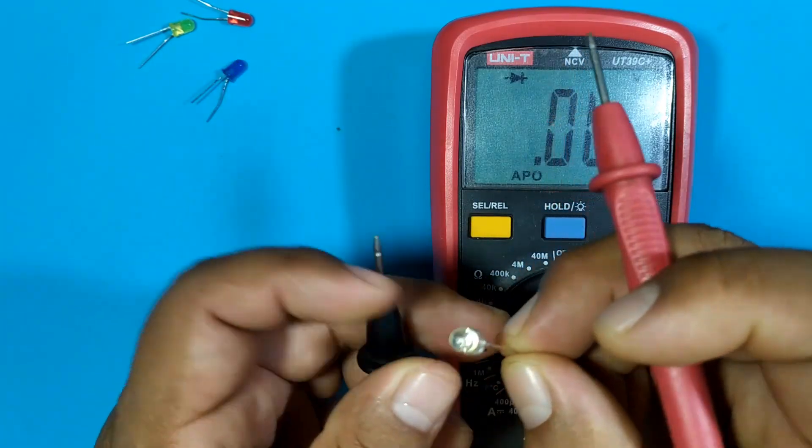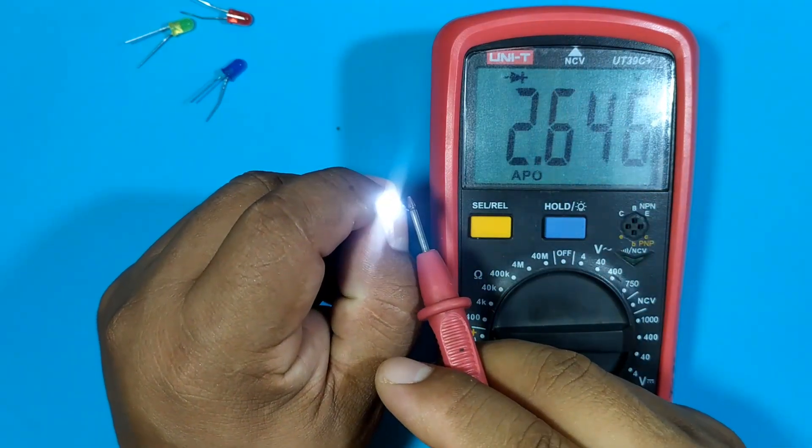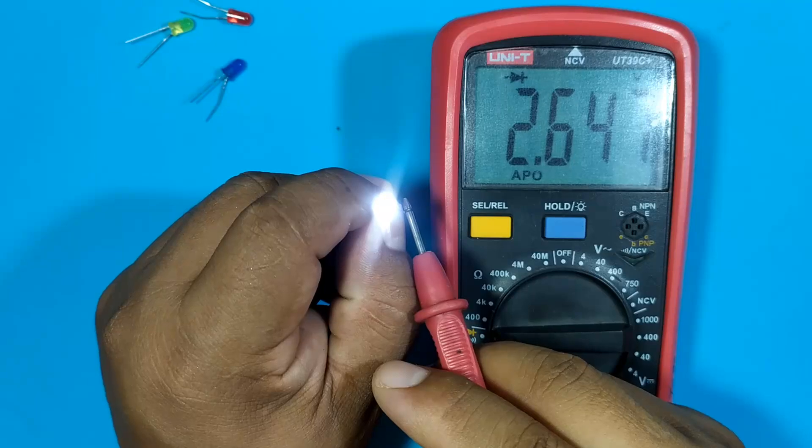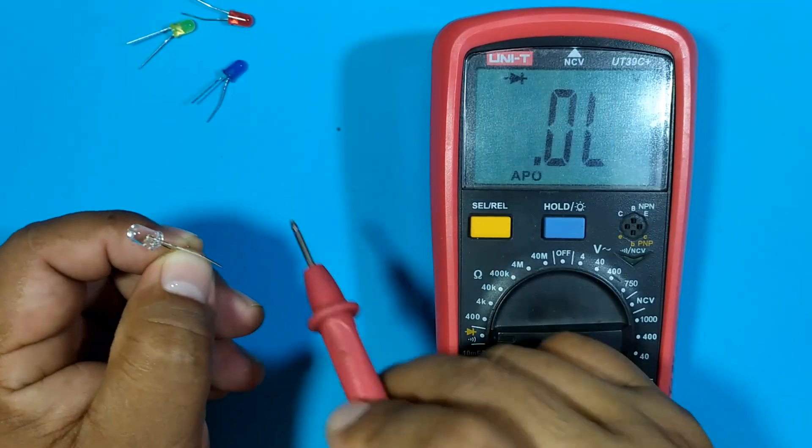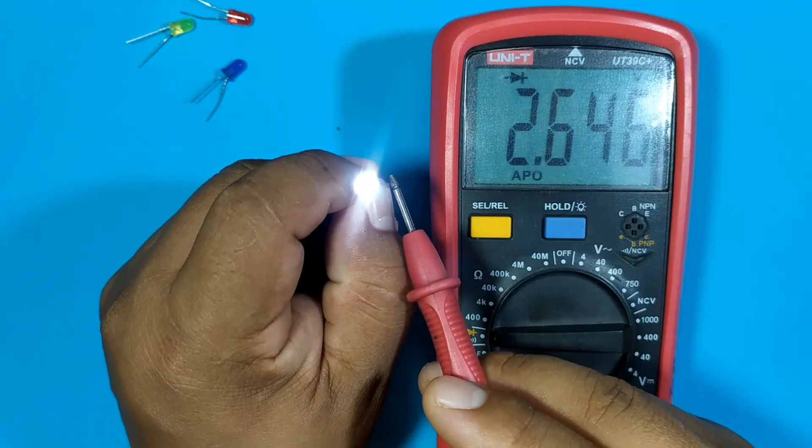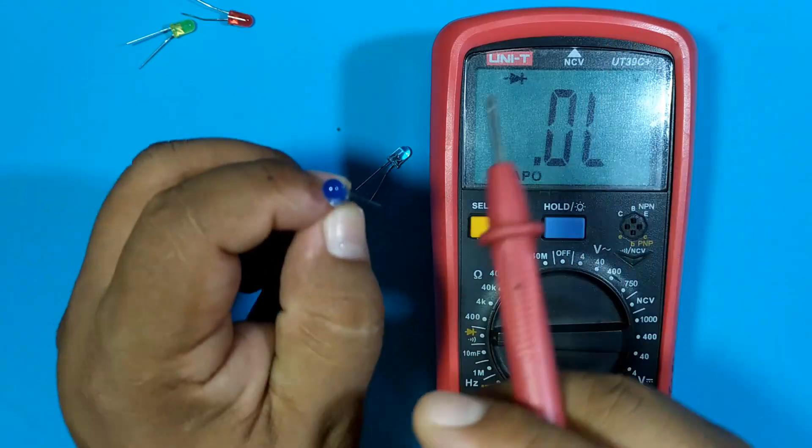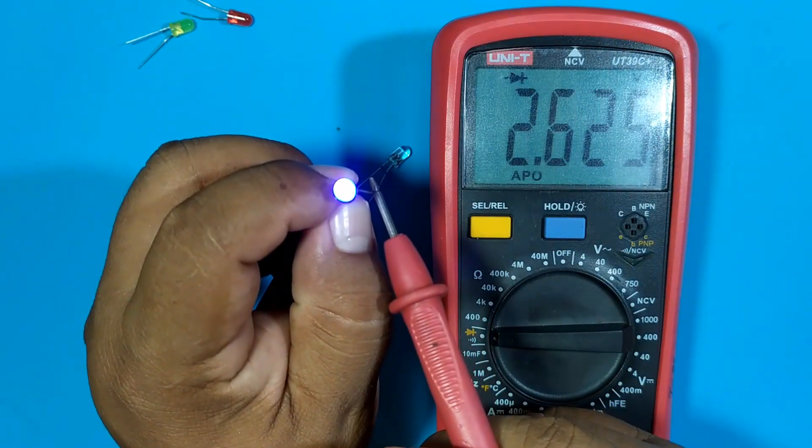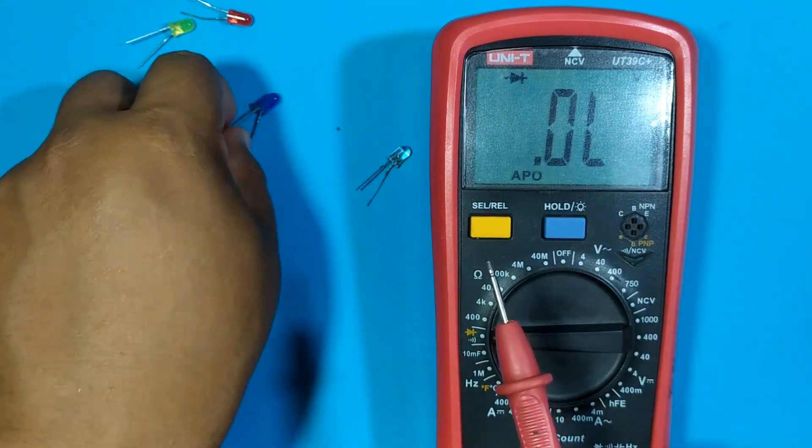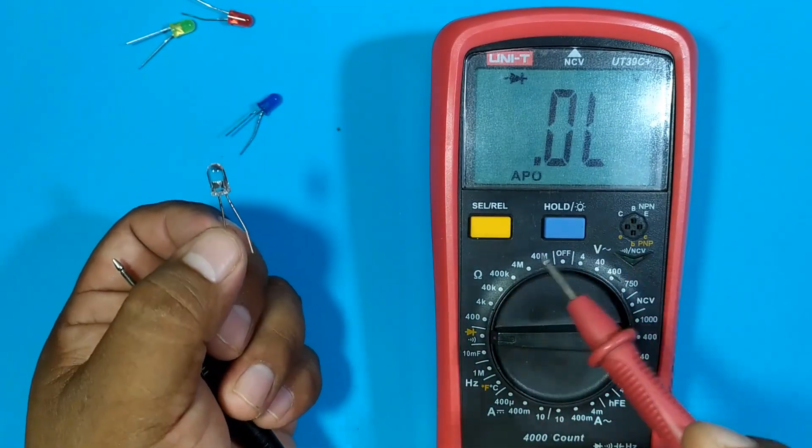Then the white one. 2.64. It is slightly higher than the blue one. 2.63. The white LED requires more voltage than the rest of the LEDs.